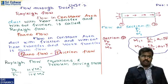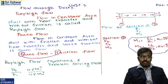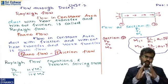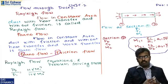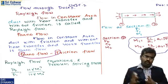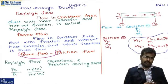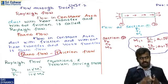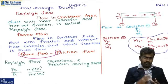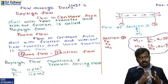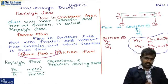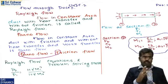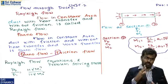Chapter two covers two separate topics: Rayleigh flow and Fanno flow. Rayleigh flow is flow through a constant area duct with heat transfer and without friction. Fanno flow is also flow through a constant area duct but with friction and without heat transfer or work transfer. A shortcut to remember Fanno flow: the first letter of 'Fanno' is F, and the first letter of 'friction' is F — so Fanno flow means there is friction.